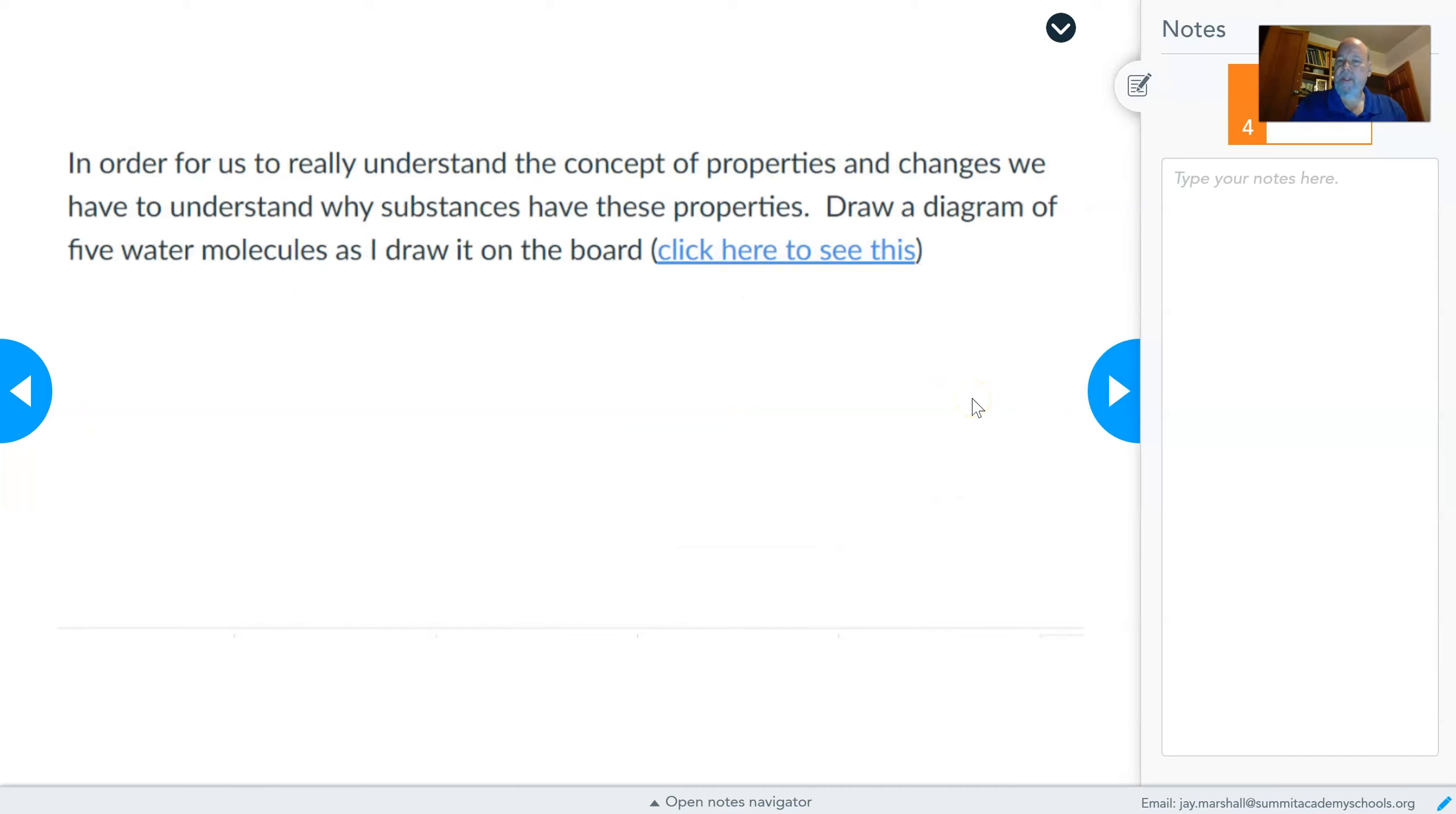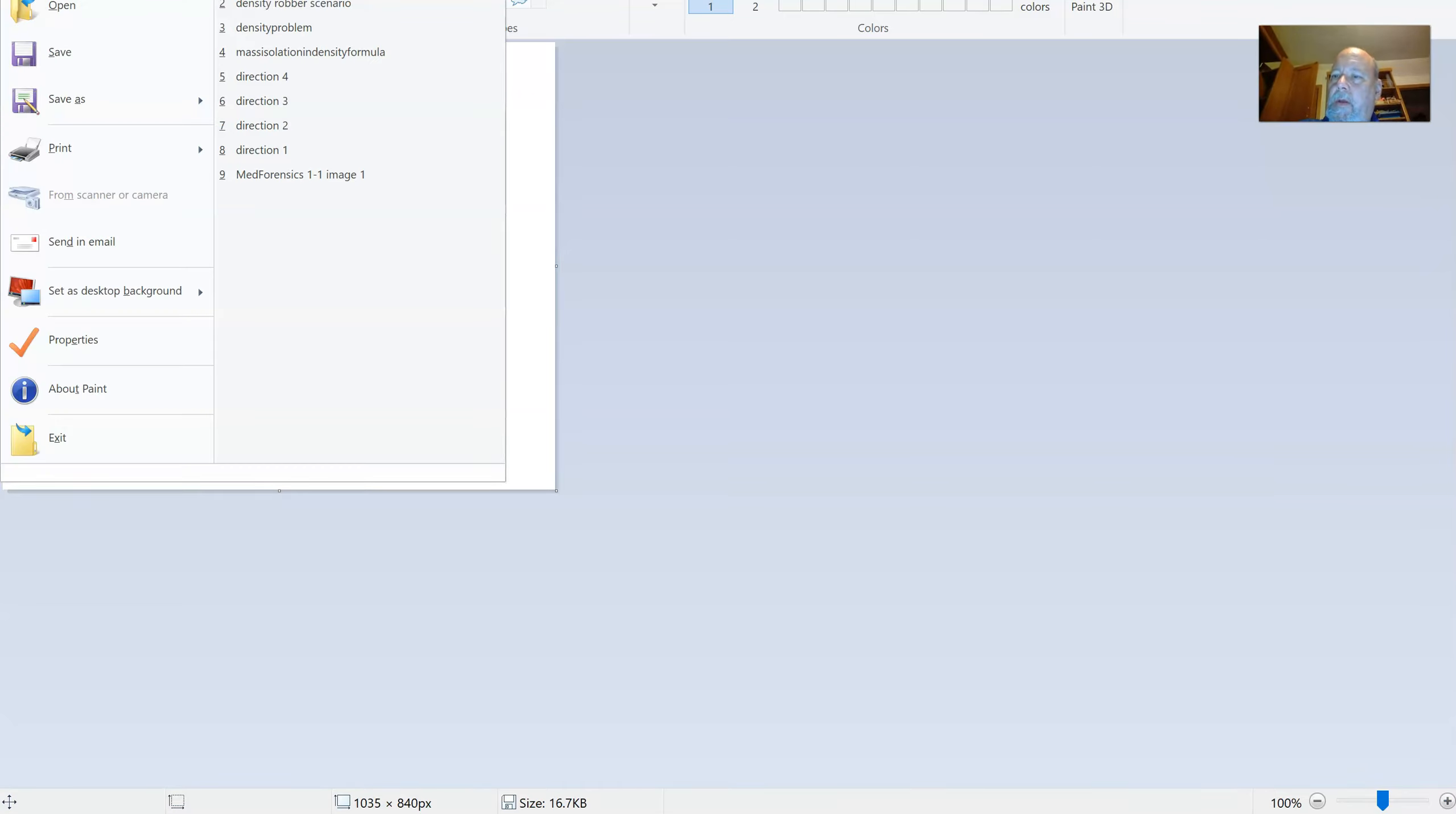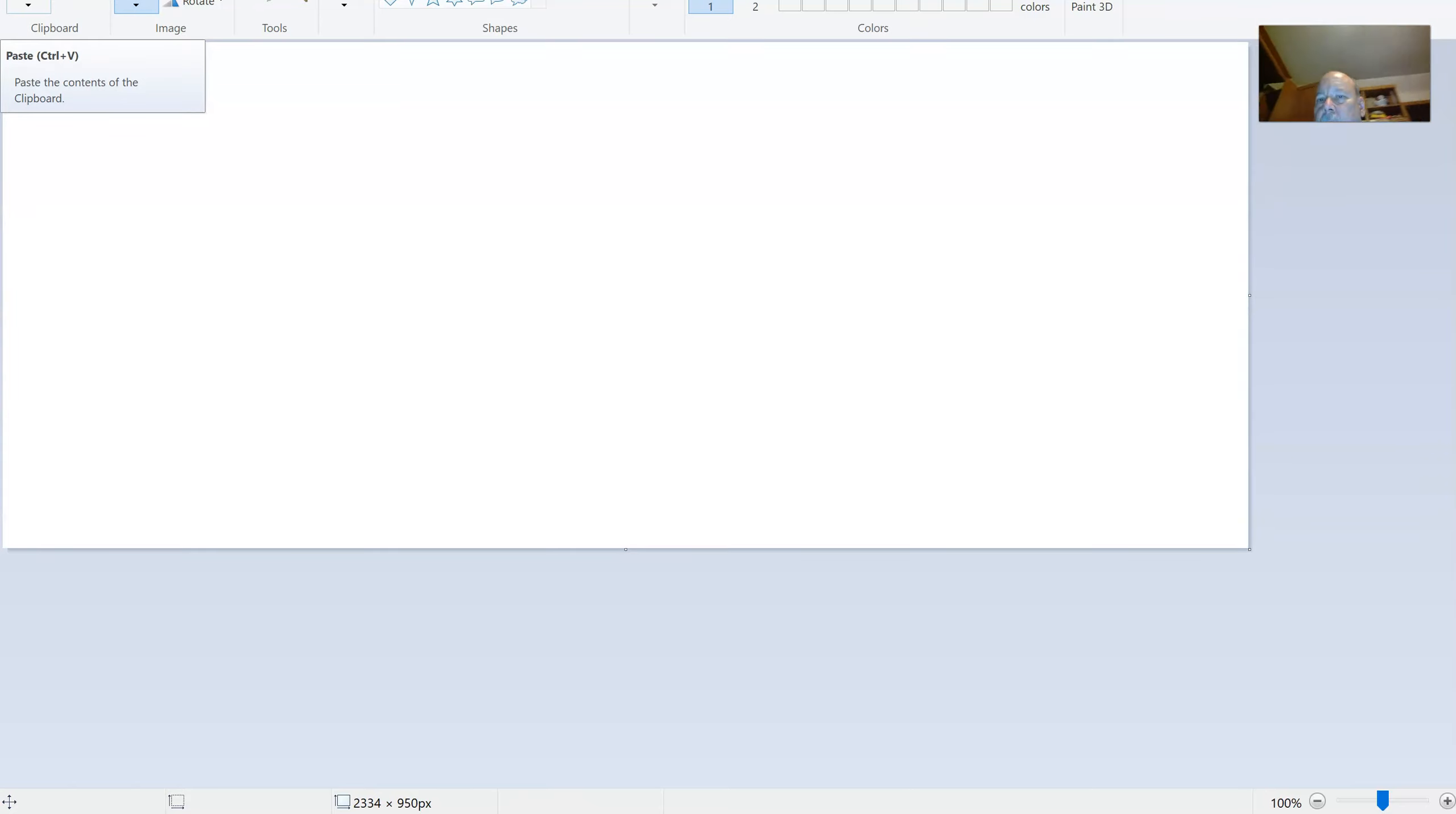So those are important definitions. In order for us to really understand the concepts of properties and changes, we have to understand why substances have these properties. What is it about these substances that give rise to their specific properties? And to start, I want to do a little drawing here.